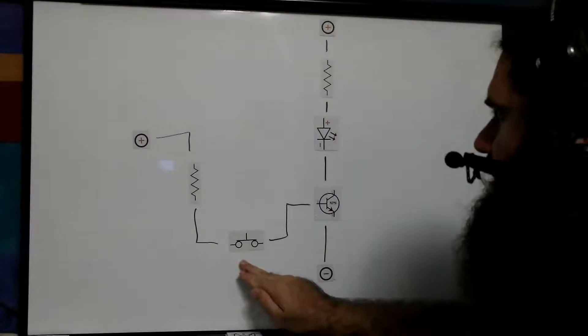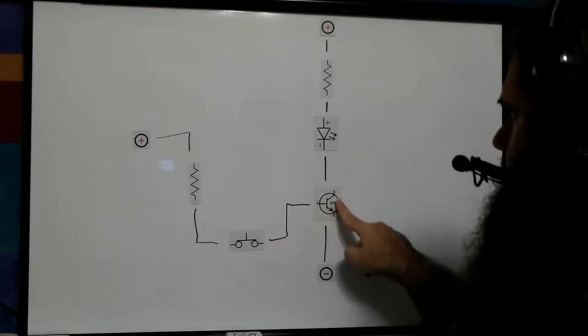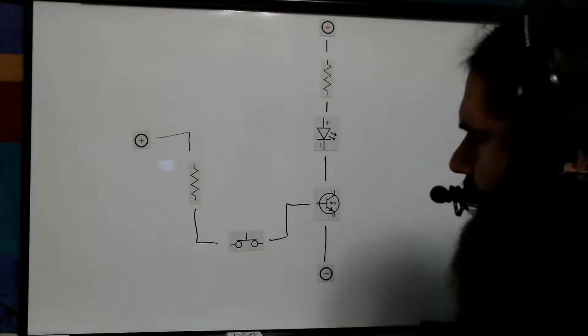So we have our button here. When it's pressed, we have a resistor limiting the current. It'll forward bias the base to emitter junction, which will light the LED.